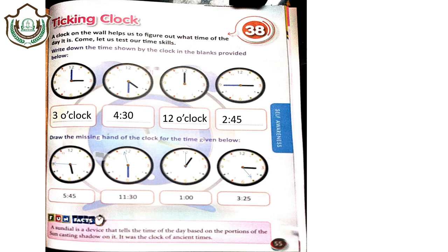In this chapter you have to tell the time shown by the clock. The first one shows 3 o'clock — the time we eat lunch. The second one shows 4:30, evening time when we eat snacks. The third shows 12 o'clock, midnight when we sleep. The fourth shows 2:45, early morning when we sleep. Now in the next four clocks, you have to draw the minute hand or hour hand. For 5:45, the hour hand is between 5 and 6 and the minute hand is at 9.